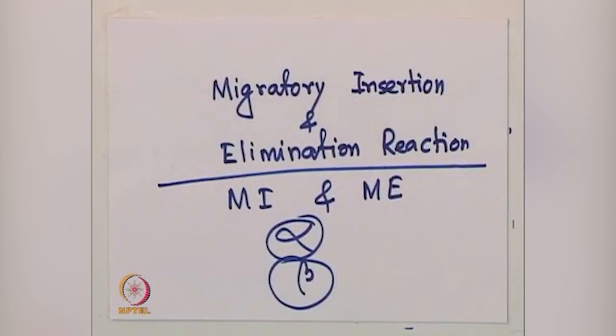Welcome everyone. Today we will discuss migratory insertion and migratory elimination reactions, called MI and ME. We have two different types of MI: alpha migratory insertion and beta migratory insertion. Migratory elimination is also of two different types. We will discuss the basics and focus mainly on the alpha and beta versions of MI and ME.